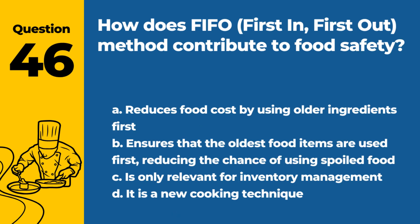Question 46. How does the FIFO (first in, first out) method contribute to food safety? A. Reduces food cost by using older ingredients first. B. Ensures that the oldest food items are used first, reducing the chance of using spoiled food. C. Is only relevant for inventory management. D. It is a new cooking technique. Answer: B. FIFO helps in managing food inventory effectively and safely.